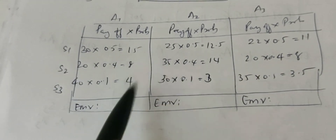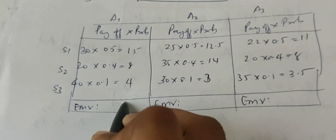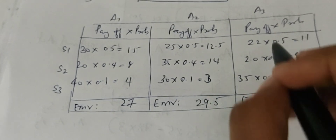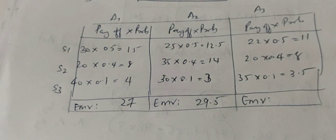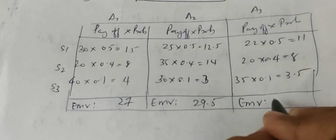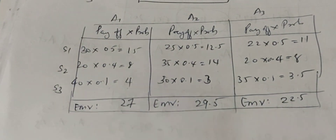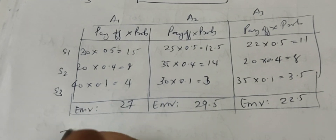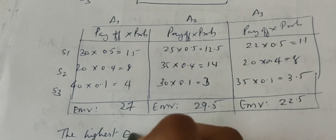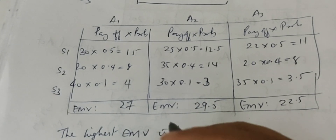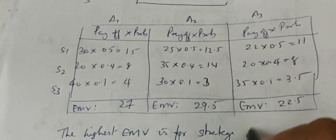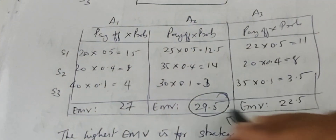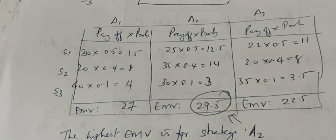The totals come out as follows: 15, 8, 4 — we add to get 27; then 12, 5, and values giving 14 and 3, totaling 29. Multiplying payoffs by probabilities: 11 plus 8 plus 3.5 gives 22.5, and another strategy gives 29.5. The highest EMV is strategy A2, which is 29.5.